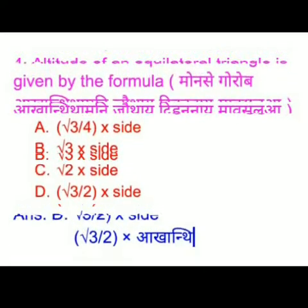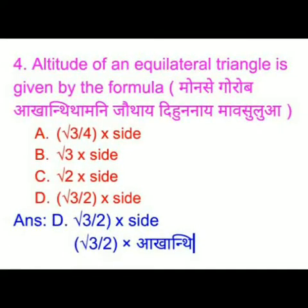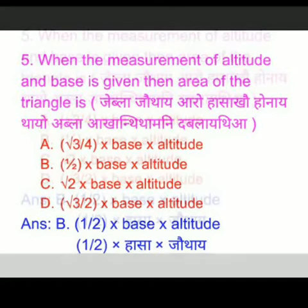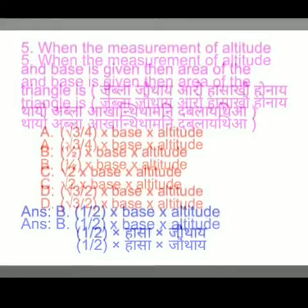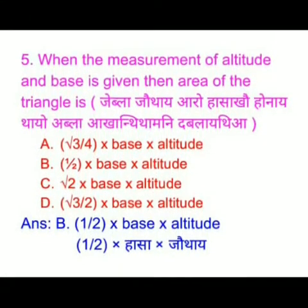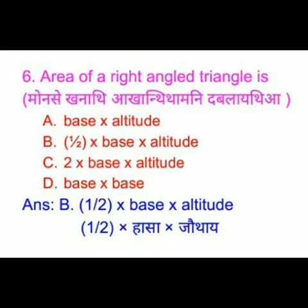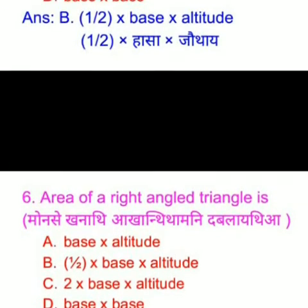the right answer is option D: root 3 by 2 into side. When the measurement of altitude and base is given, the area of the triangle — we have four options and the right answer is option B: 1 by 2 into base into altitude.